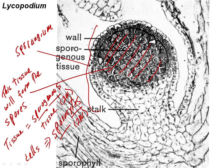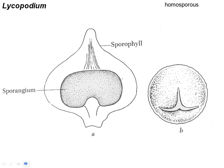We're going to start emphasizing sporocytes more as they play a much more important role in the higher land plants. In the development of the sporangium, there's a stage where meiosis hasn't taken place and those cells are diploid. Then they will divide by meiosis and become haploid spores. Here's our sporangium and sporophyll again with a ligule. Here is a haploid spore.